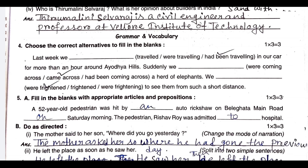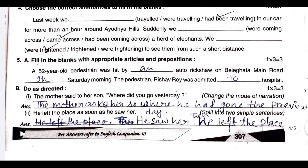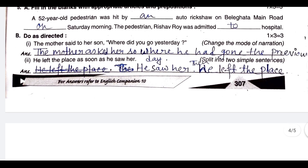We had been traveling in our car for more than an hour around Ayoda hills. Suddenly, we came across a herd of elephants. We were frightened to see them from such a short distance. A 52-year-old pedestrian was hit by an auto rickshaw on the main road on Saturday morning. The pedestrian, Rishabh Roy, was admitted to hospital. The mother said to her son, 'Where did you go yesterday?' Narration changed: the mother asked her son where he had gone the previous day. He left the place as soon as he saw her.